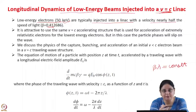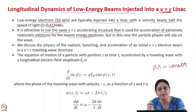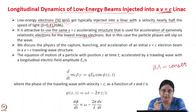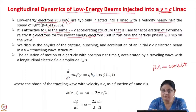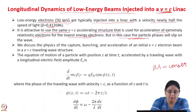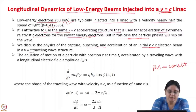Low energy electrons are typically injected into a linac with velocity nearly half the speed of light. The beta for a 50 keV electron is 0.412, so the electron is non-relativistic. We will discuss the capture, bunching, and acceleration of an initial v<c electron beam in a v=c traveling wave structure. A traveling wave structure is a periodically loaded waveguide. The hollow waveguide cannot be used for acceleration because the phase velocity is greater than the velocity of light. These waveguide structures are loaded periodically to slow down the phase velocity to match the electrons.